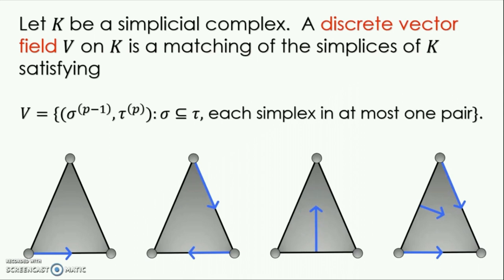Here are four examples of a discrete vector field on the two-simplex. A pair in a matching can be represented by an arrow, with the tail of the arrow starting in the lower-dimensional simplex and the tip or head of the arrow moving into the higher-dimensional simplex. The rule that each simplex is in at most one pair means that no two tails are coming out of one simplex, nor are two arrows entering a simplex.